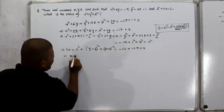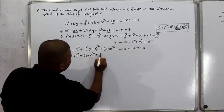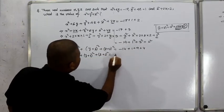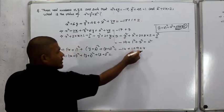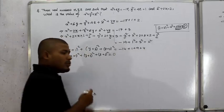We have x plus 1 whole square plus y plus 3 whole square plus z plus 2 whole square equals 1 plus 9 is 10, plus 4 is 14. 14 minus 14 gives us 0. The result is 0.